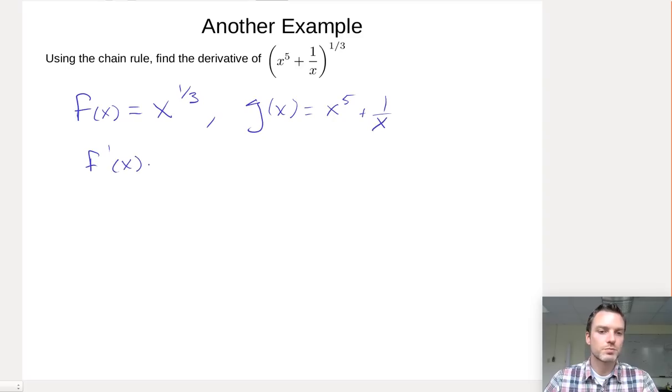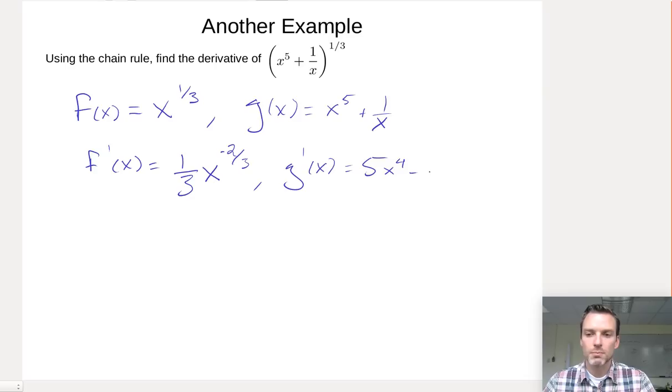F prime of x, well, you bring this exponent down, and you subtract 1 from that exponent, so now I have minus 2 3rds. Similarly, g prime of x is just 5x to the 4 minus 1 over x squared.